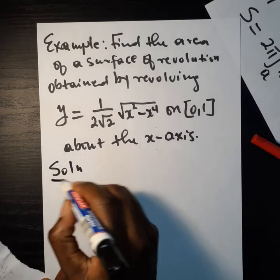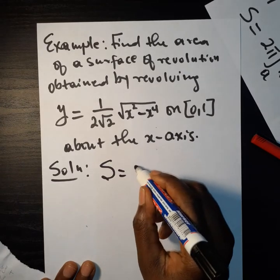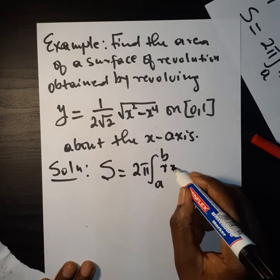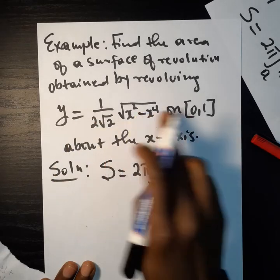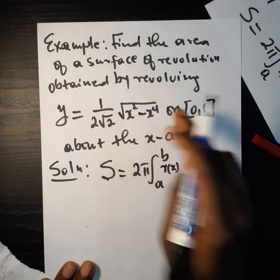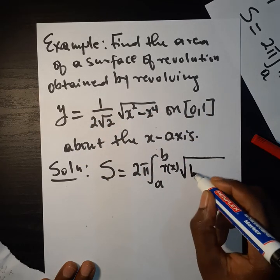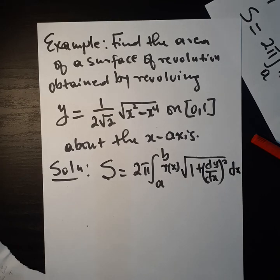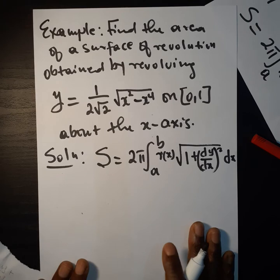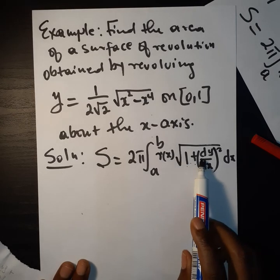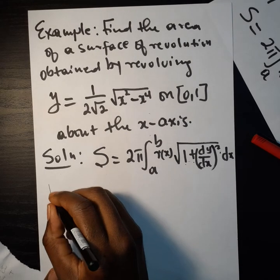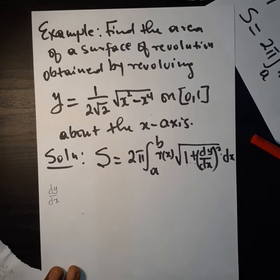As a solution, we understand that we are looking for s equal to 2π, the integral from 0 to 1, of r of x — which is given by our y — times the square root of 1 plus dy/dx all squared, dx. The interesting part of our problem is to find the square root of 1 plus dy/dx all squared.